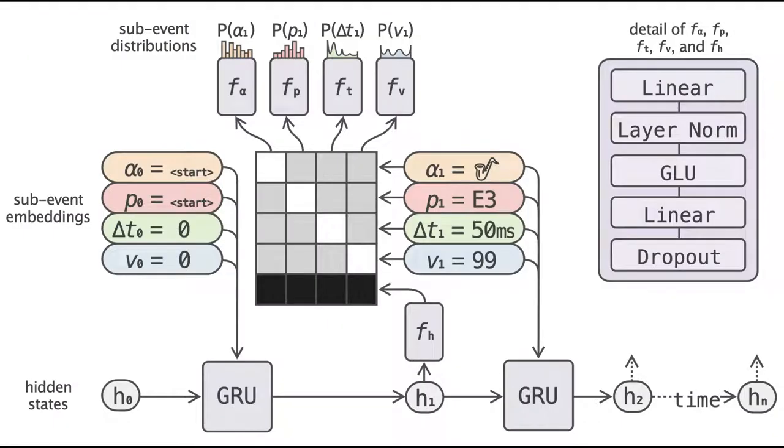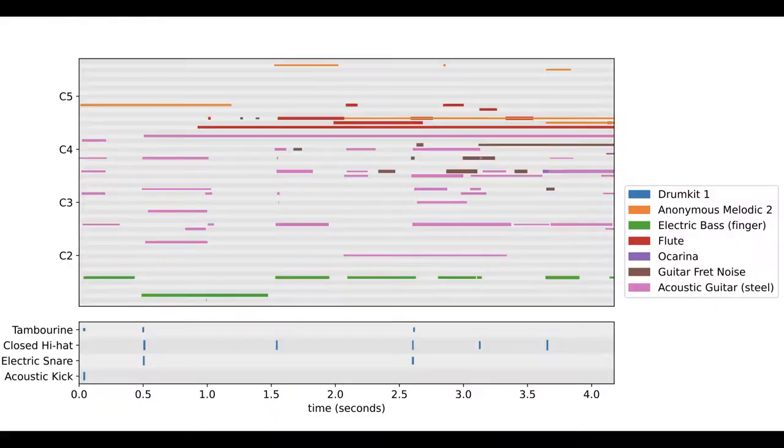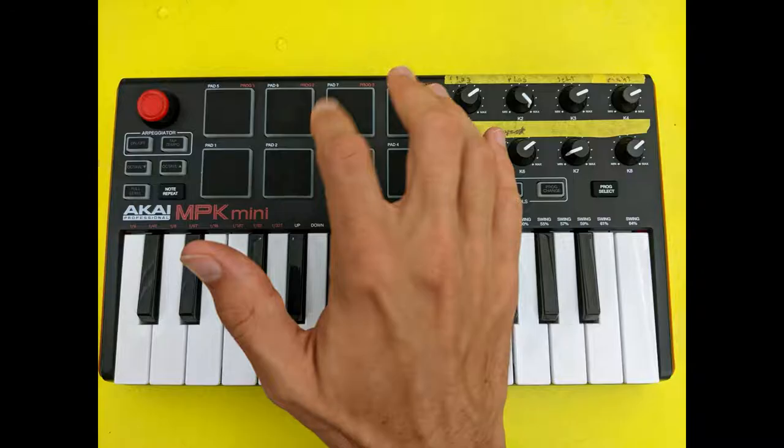To summarize, Notochord is an autoregressive generative model for MIDI sequences. It can generate MIDI streams with polyphony and multiple instruments at a low latency, and it doesn't require any predetermined musical structures like a fixed tempo. To achieve this, it compromises on fidelity. Notochord generates less coherent music than state-of-the-art models, but it can be interacted with in a very immediate, hands-on way.